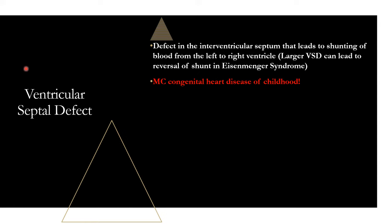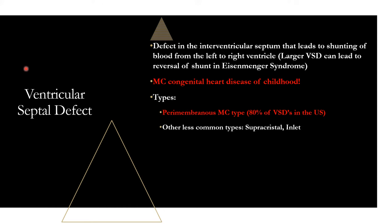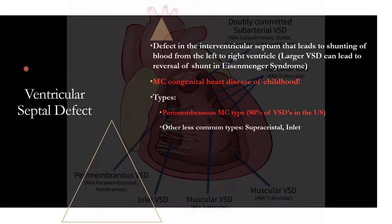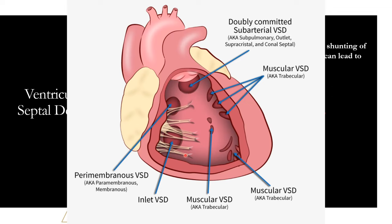For the different types, don't remember all of them — just definitely remember your most common type. That's going to be perimembranous, which accounts for about 80% of VSDs in the US. There are a few other less common ones like supracristal and inlet types, but don't worry about those. Just remember perimembranous as the most common type.